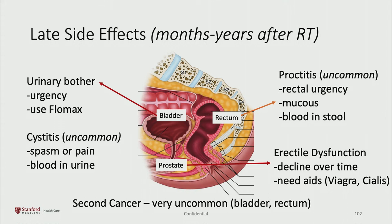Second cancers caused by radiation in the radiation area — such as bladder or rectal cancer — have been described years after radiation. This is very uncommon and typically seen 20-plus years after radiation, and even then it's very rare. The main point is that patients are still at risk of other cancers anyway, so we want to make sure you're doing screening for things like colorectal cancer.